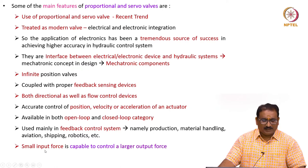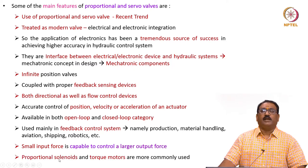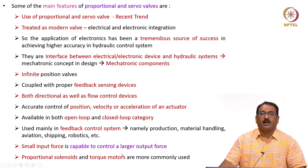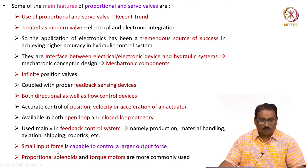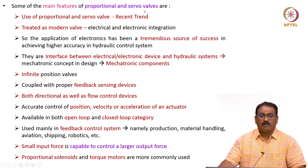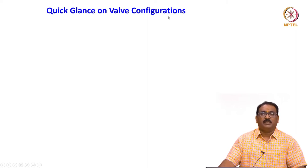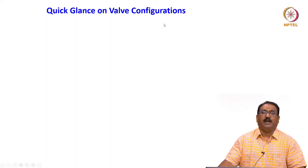An important advantage is that a small input force is capable of controlling a large output force. Proportional solenoids and torque motors are more commonly used. Please remember: proportional valves work on proportional solenoids, while servo valves are driven through torque motors. After knowing these important features, we will move on to a quick glance at valve configuration, which is essential to understanding valve dynamics in both proportional and servo valves.